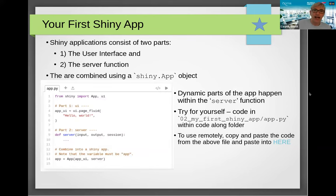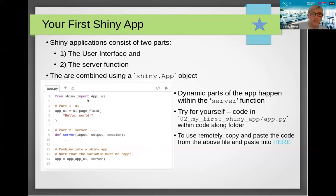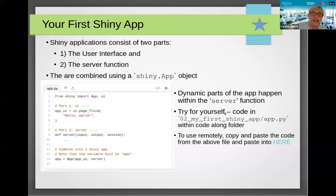Now we'll look at our very first Shiny app. Applications consist of two parts: the user interface — the app_ui variable — and the server function below. We combine them using shiny.App, passing the ui and the server to create a variable app. In this instance we're not going to give the server anything, so it will be pretty static — just giving us the user interface. You can try this yourself; in the code-along folder there's a second folder called '02_my_first_shiny_app' with app.py. To use the web browser, open the .py file and copy-paste it into the URL I shared, hit the play button, and it'll execute.